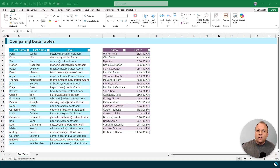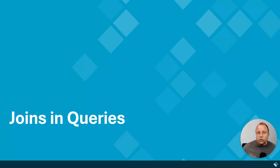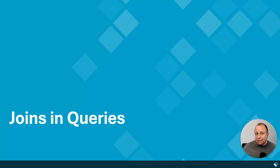Let me talk about a couple of different types of merges. When we do a merge in Power Query, we use different join types. The different join types are inner, outer, and anti-joins, with either a left or a right modifier.